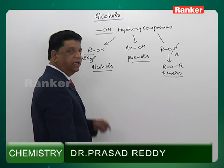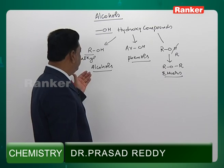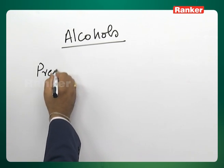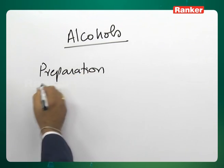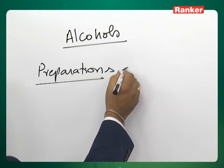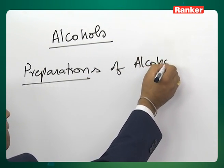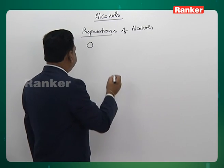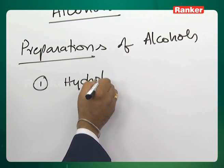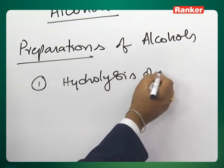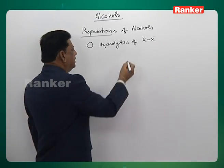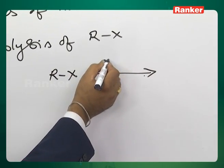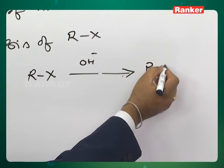Now first we will take up the preparations and properties of alcohols. The first method will be preparing alcohols by hydrolyzing the alkyl halides — that is, hydrolysis of alkyl halides RX. The general equation: RX when treated with OH⁻ will give ROH.